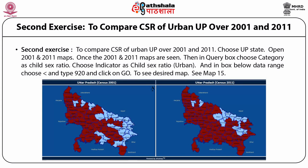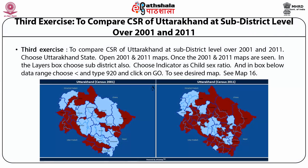The second exercise is on urban UP, looking at changes between 2001 and 2011: choose UP state on censusgis.org, open 2001 and 2011 maps simultaneously, then in the query box choose the category child sex ratio, indicator as urban child sex ratio, and data range less than 920. The third exercise looks at Uttarakhand at sub-district level between 2001 and 2011: choose Uttarakhand state on censusgis.org, open both maps, choose sub-district and indicate child sex ratio with data range less than 920.